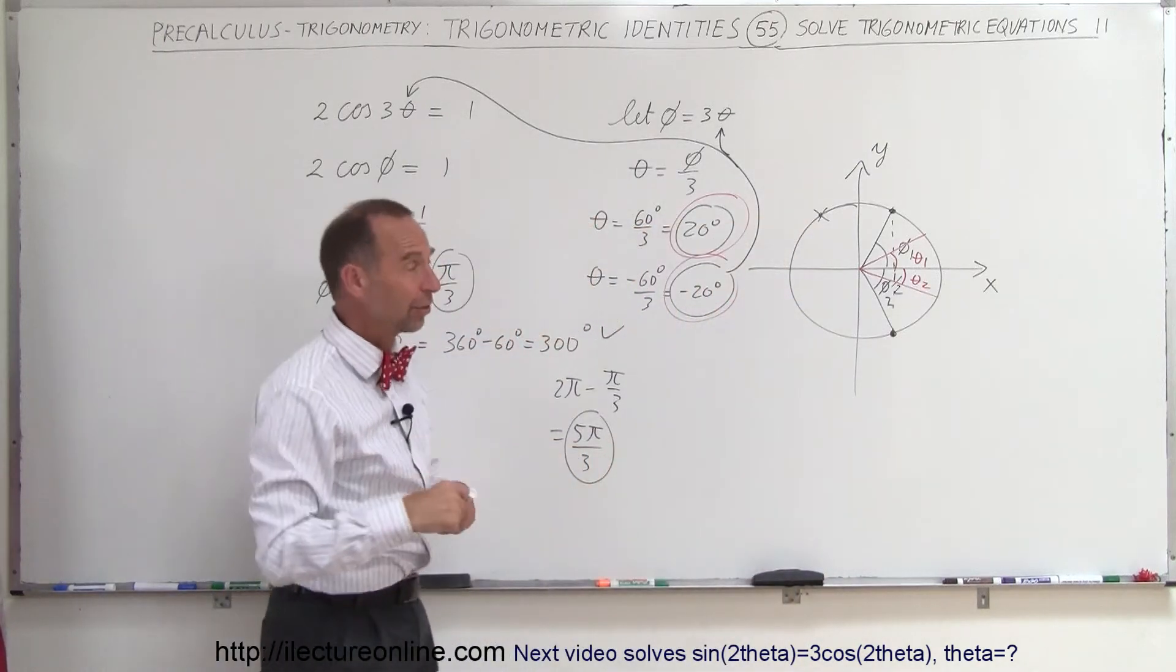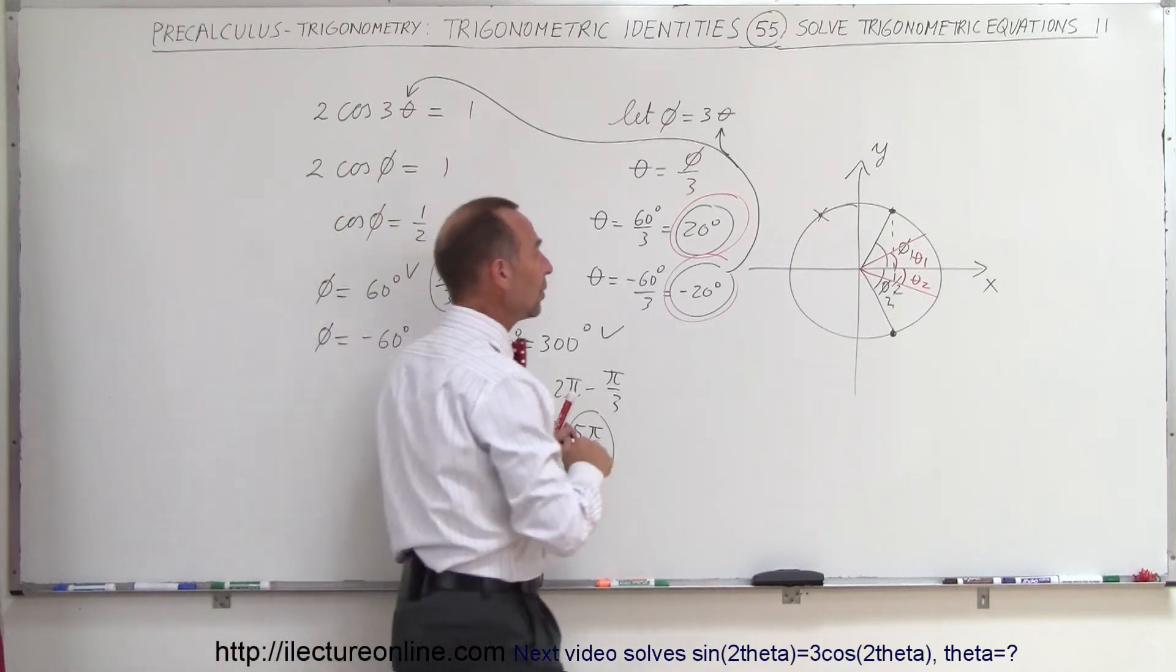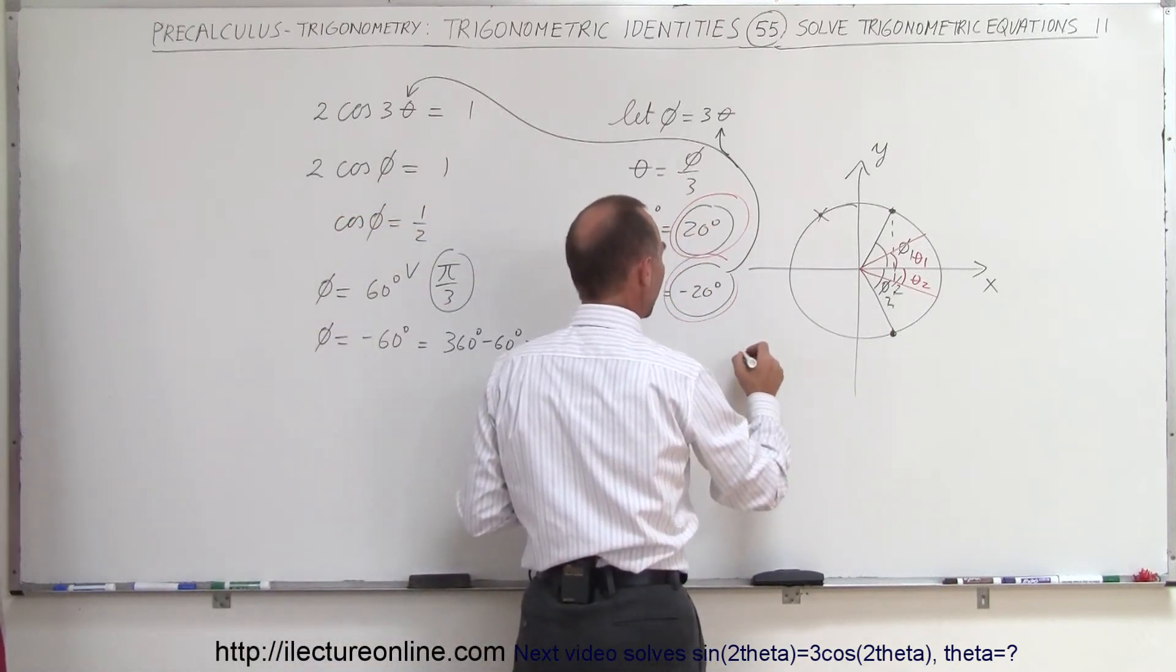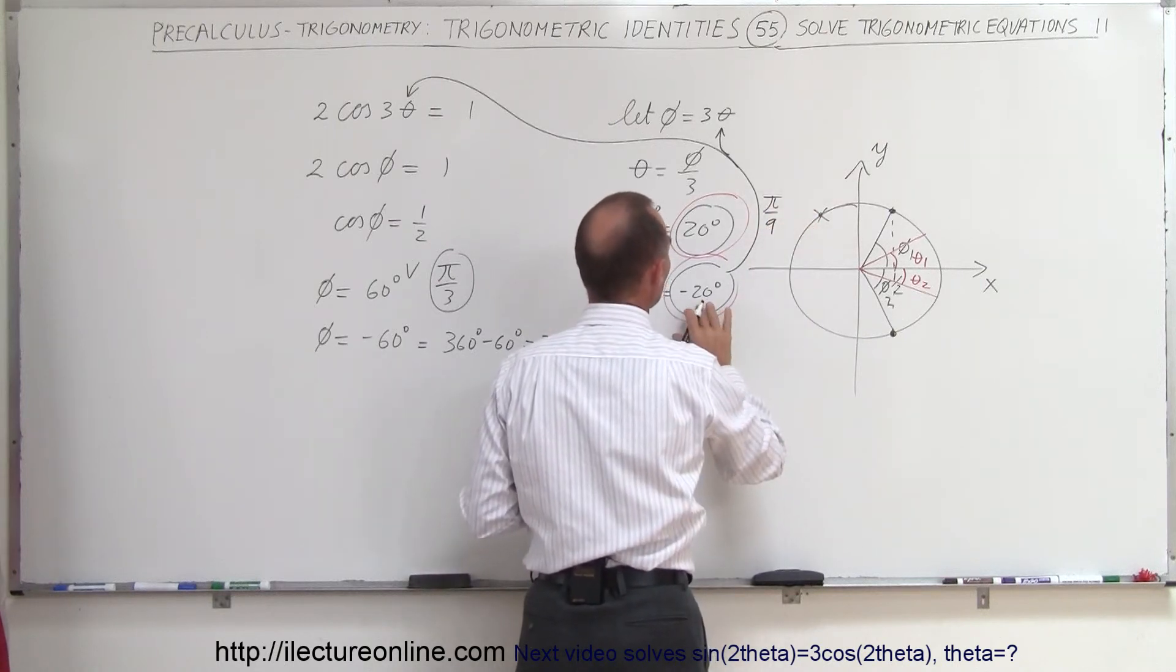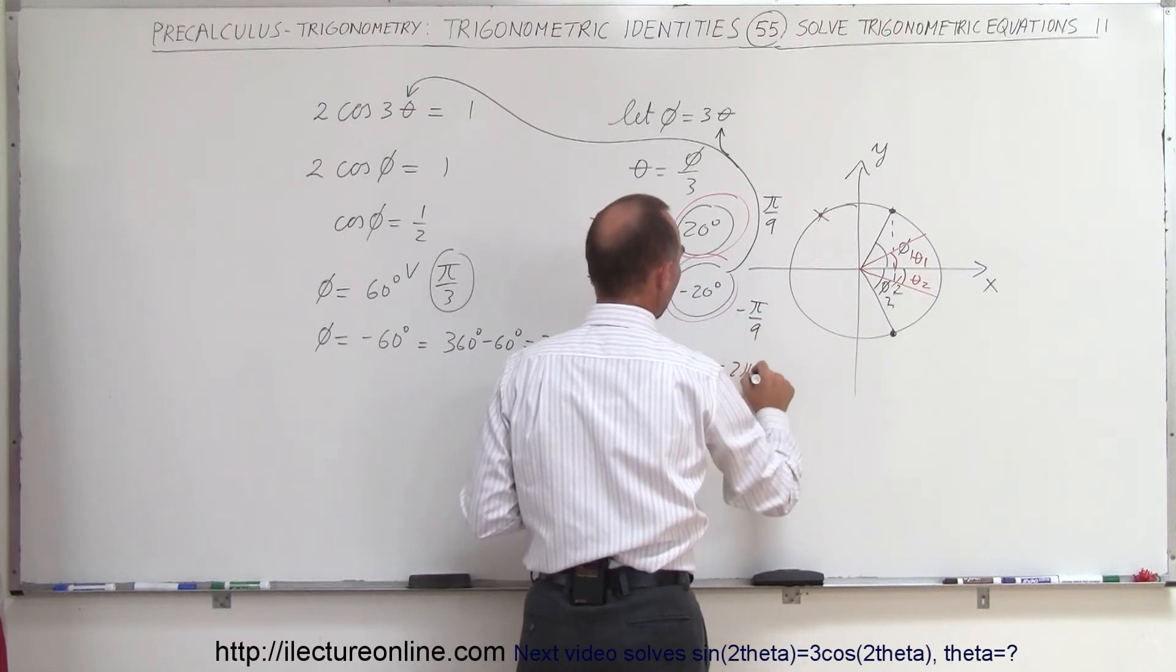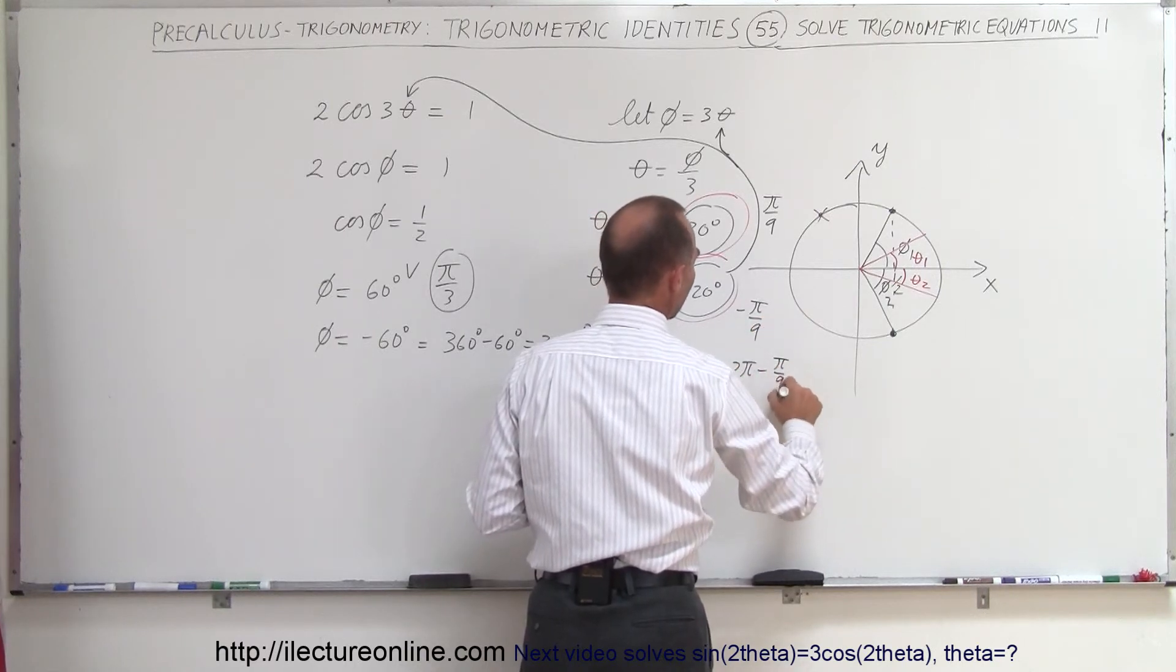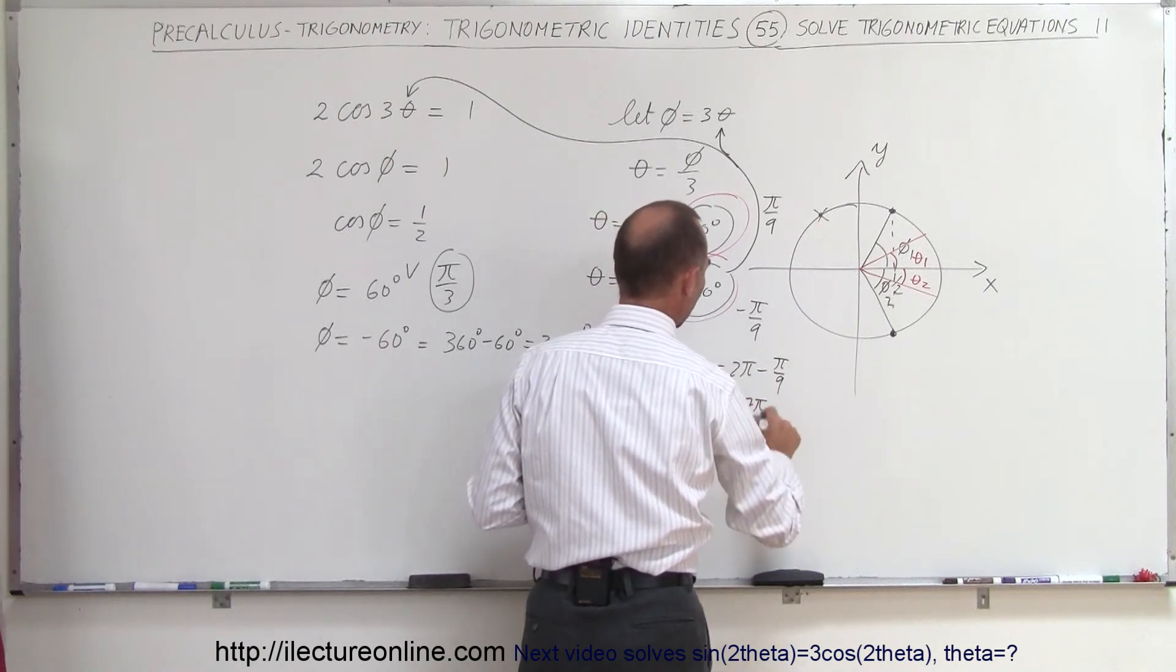Of course, I want to convert that to radians. 20 degrees is 1 ninth of pi, so that would be pi over 9. And this here would be minus pi over 9, or this is equal to 2 pi minus pi over 9, which is equal to 18 minus 1, or 17 pi over 9.